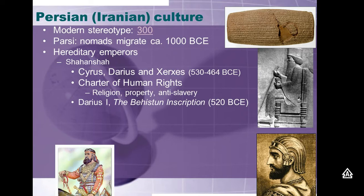If you look at lines 4.33-6: 'Saith Darius the king, these are the provinces which became rebellious. The lie made them rebellious, so that these men deceived the people. Afterwards, Ahura Mazda put them into my hand, as was my desire.' So he's saying those conquered territorial states deserved it because they were ruled by the lie — they were rebellious and led astray.